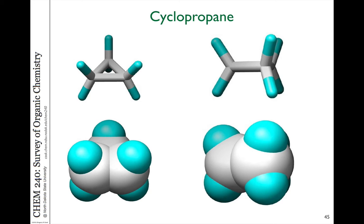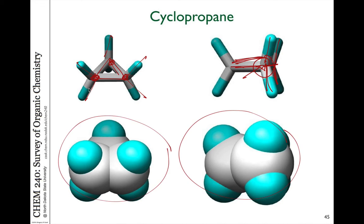In cyclopropane, since there are only three carbons, three points define a plane, so all three ring carbons lie in one plane. The hydrogens hanging off the carbons are all eclipsed with each other. Looking at the side view, which is more like a Newman projection, you can see that each bond is eclipsed with the bond in the back. You can see that in the space-filling models as well.